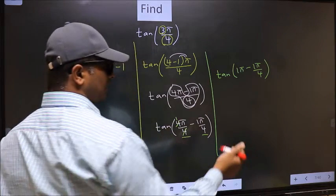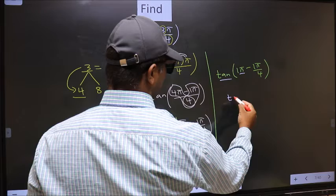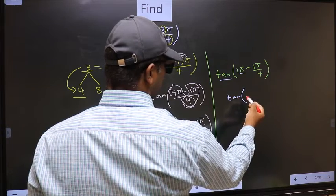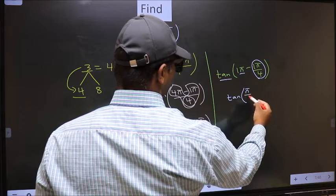Next, here we have π. So tan is not going to change, it will remain tan. And inside, we get this angle, π/4.